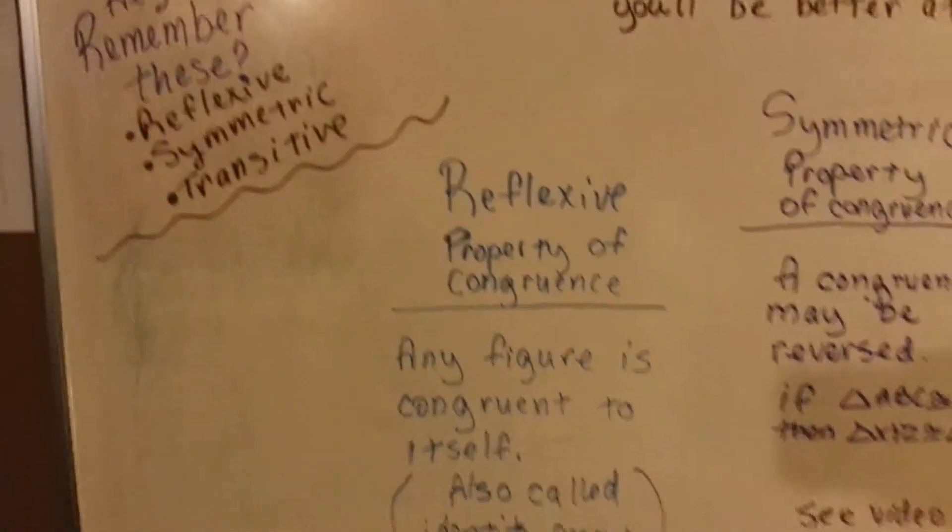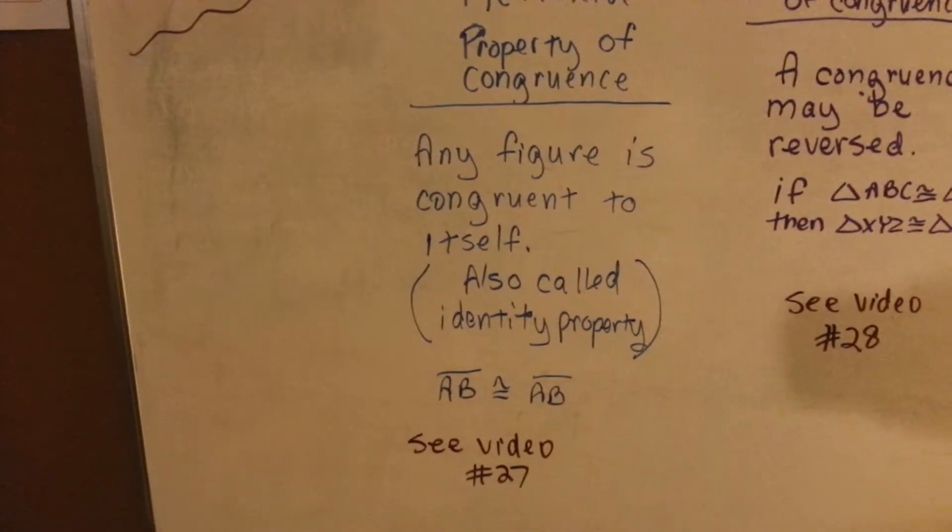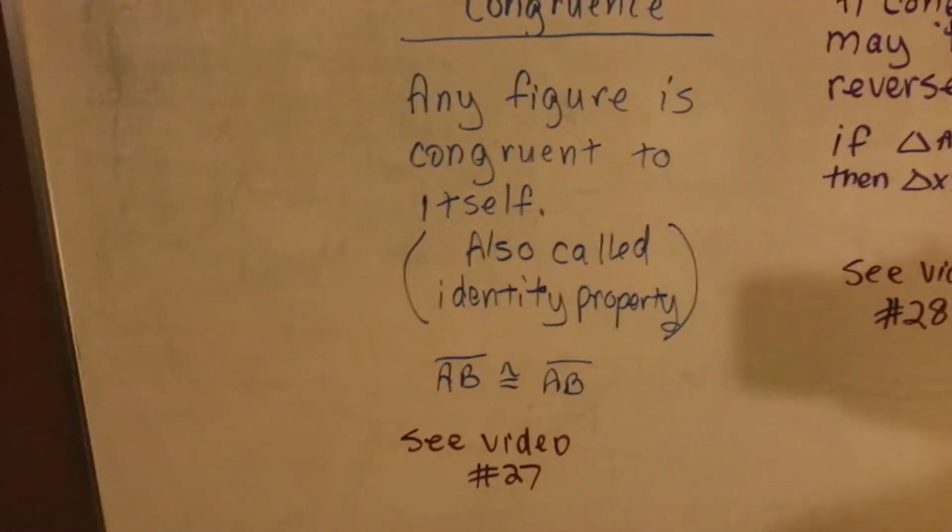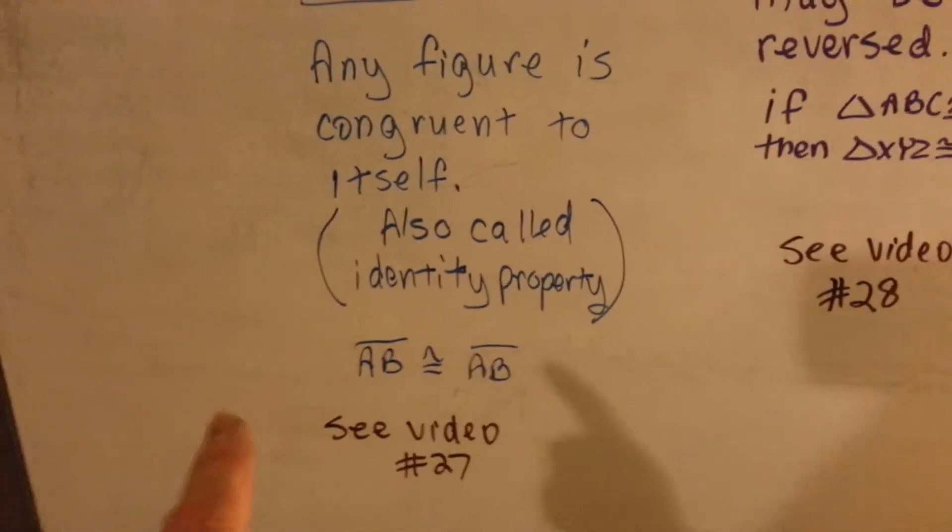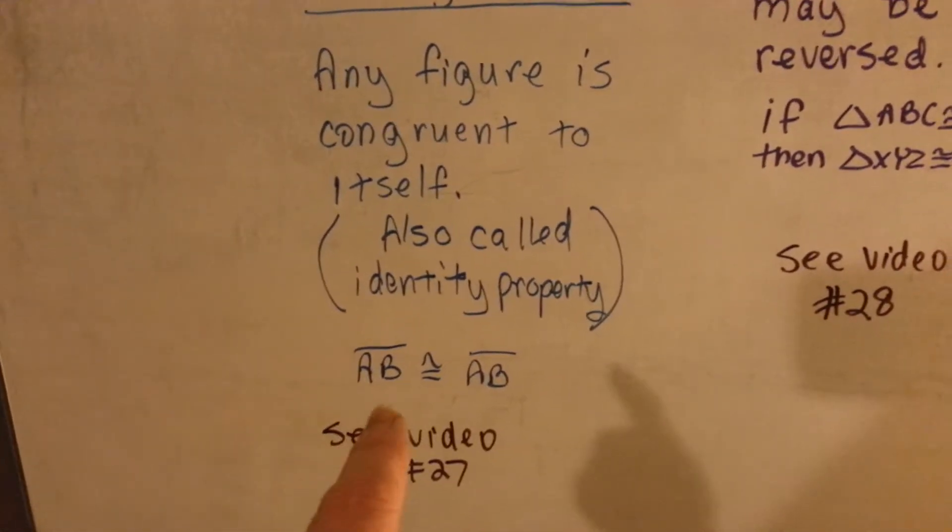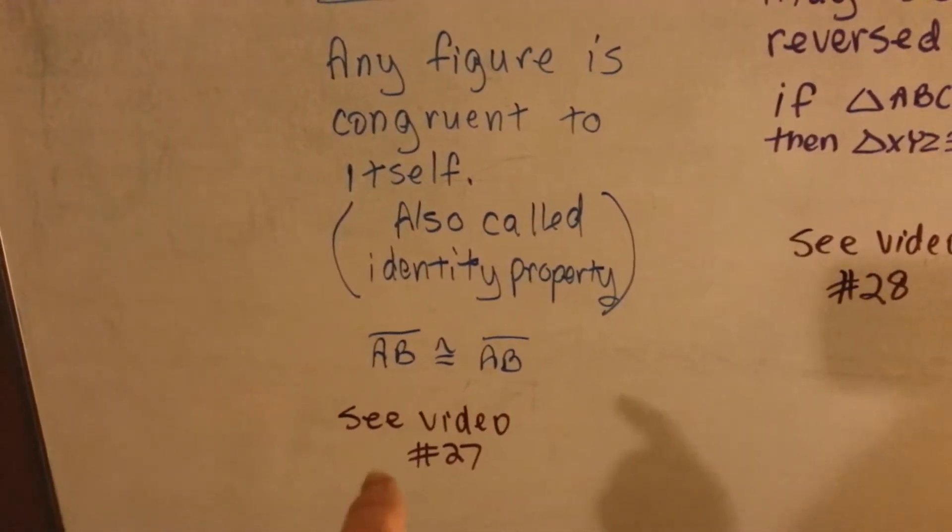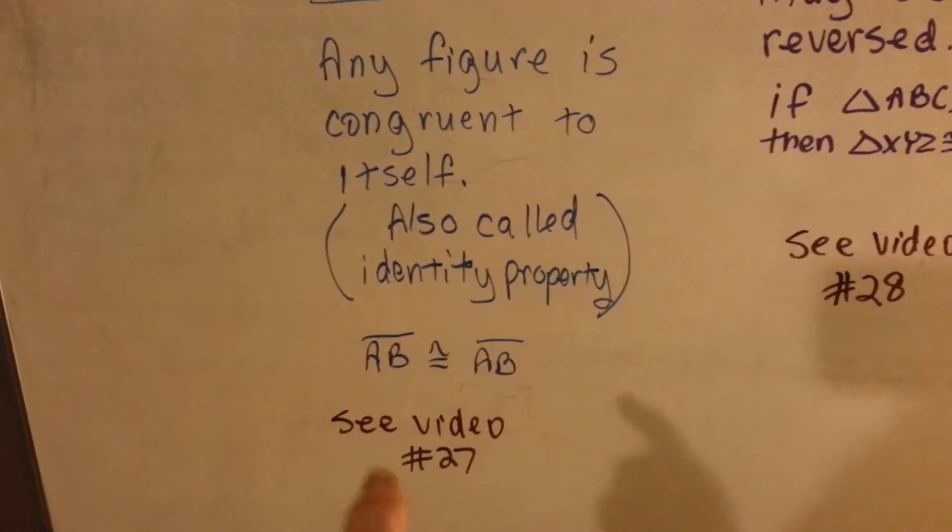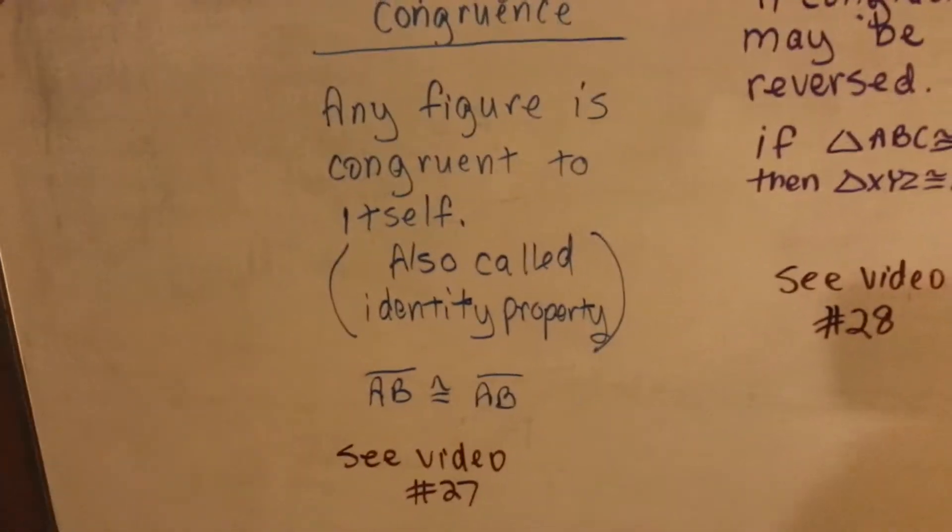So, reflexive is the reflexive property of congruence. Any figure is congruent to itself. It's also called the identity property, and it means line AB is congruent to line AB. You can go back to see video number 27, and it'll go into a bigger description of this in more detail.